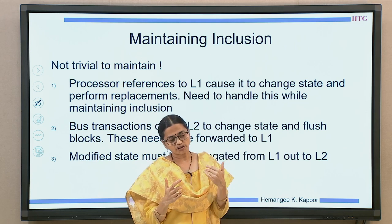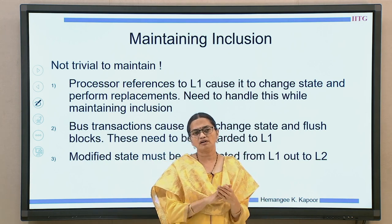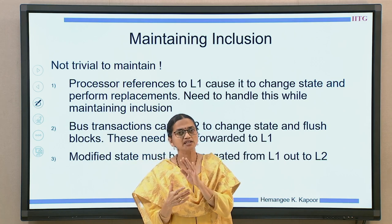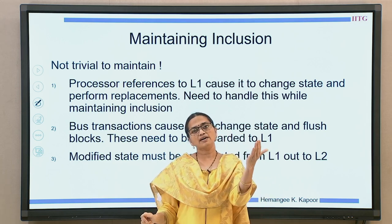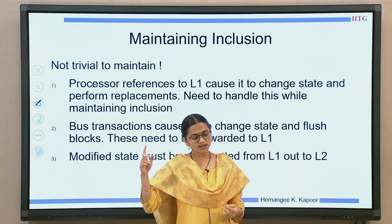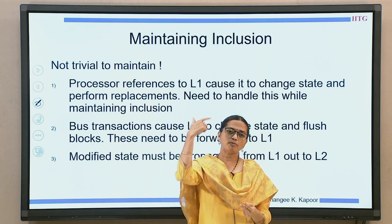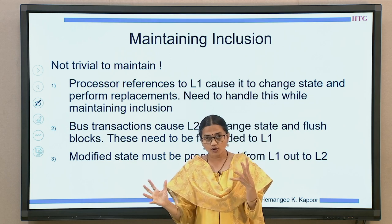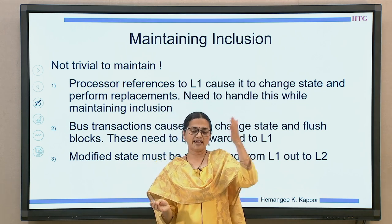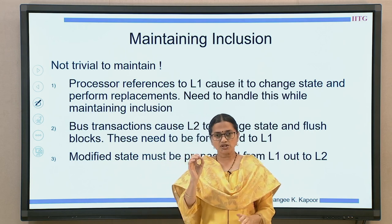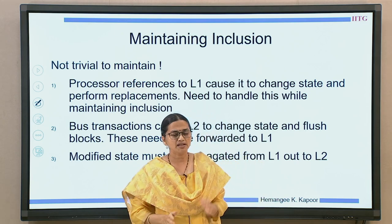When you have inclusion, processor references which go to L1 change the state of a block in L1 but not in L2. So how do I maintain inclusion by propagating this information? Second, if bus transactions come on L2, only L2 knows about them and changes its state — that state change has to be propagated to L1. Inclusion actually means they know each other's information as well as the blocks being in both caches. Information should be propagated from L1 to L2 as well as from L2 to L1.